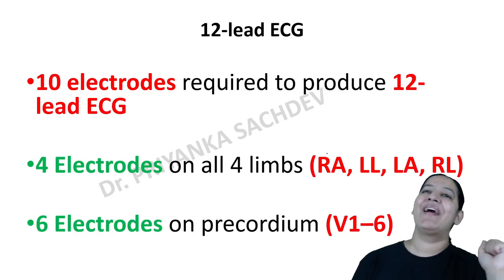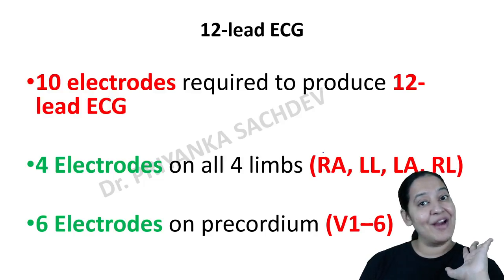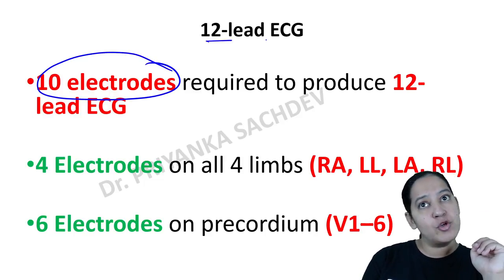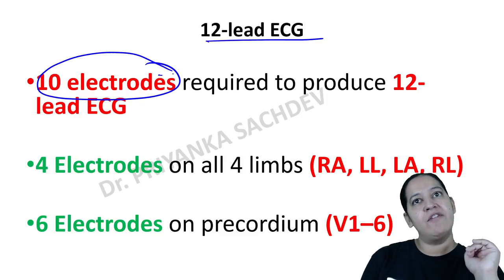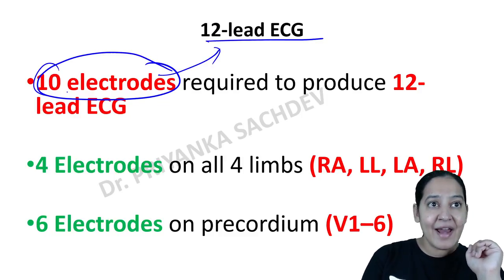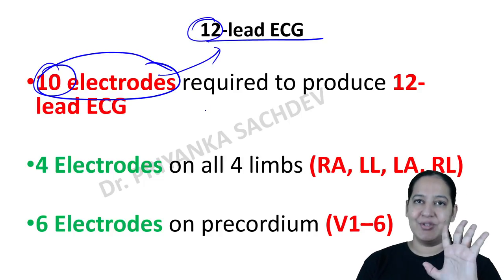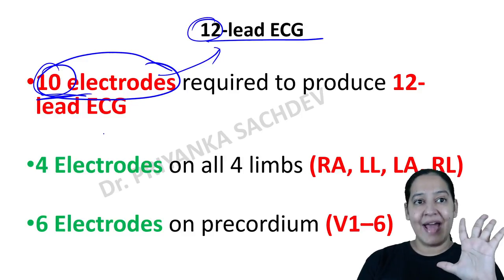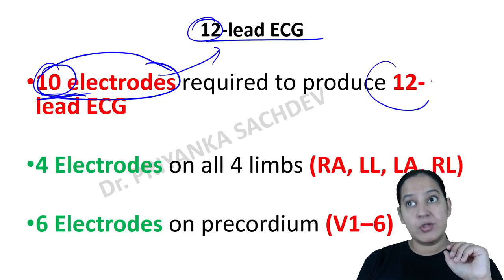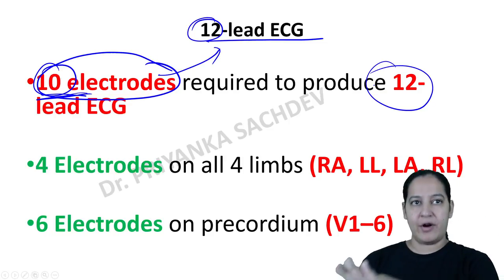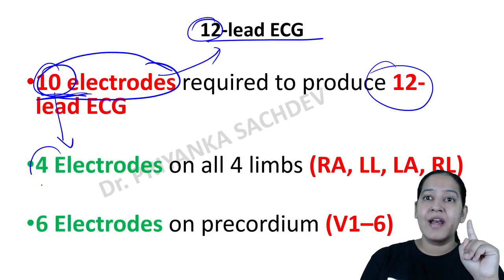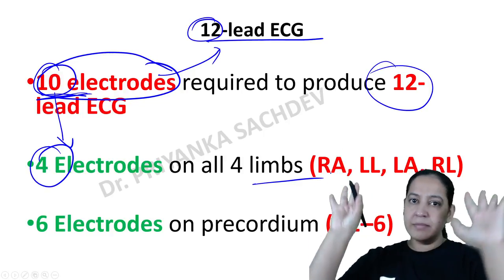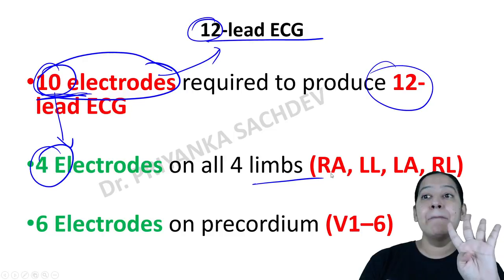Most students have confusion here: we use 10 electrodes to produce a 12-lead ECG. From 10 electrodes, 12 leads are generated. The 10 electrodes consist of 4 limb electrodes — right arm (RA), left arm (LA), right leg (RL), and left leg (LL) — and 6 chest electrodes known as precordial electrodes V1 to V6.